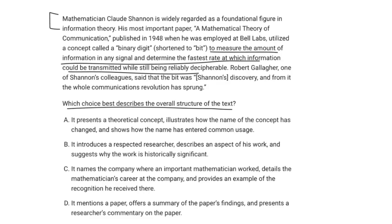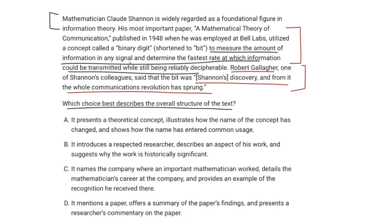The next sentence introduces Robert Gallinger — a different person. He's one of Shannon's colleagues and says that the bit was Shannon's discovery and from it the whole communications revolution was sprung. So this is another perspective — a researcher's commentary on Claude Shannon's work. The question asks which choice best describes the overall structure. Without looking at the answer choices: we have a famous mathematician introduced, his famous work, and then another researcher's commentary on that work.